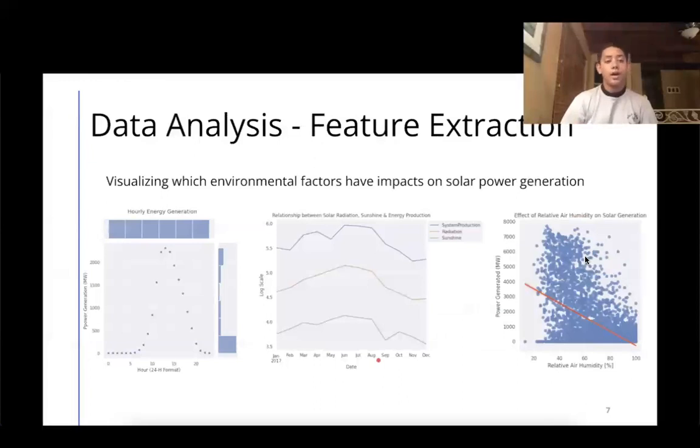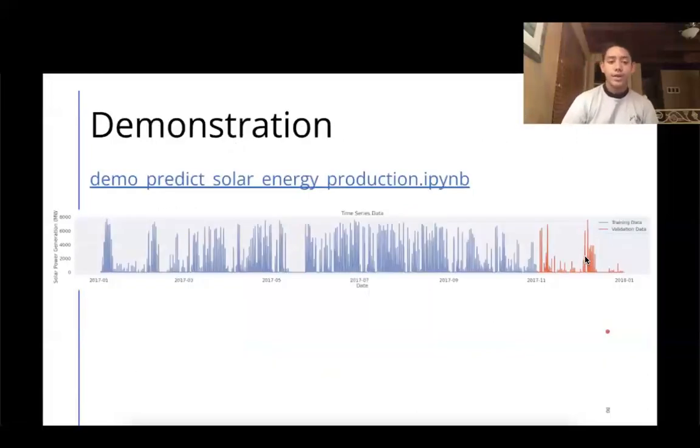Let's see our data analysis. We can see some important correlations. First of all, during the noontime hours, we tend to see higher power generation as expected, and in the summer months, there was higher system production, radiation, and sunshine. Overall, we can also see a negative correlation with relative air humidity to solar power generation.